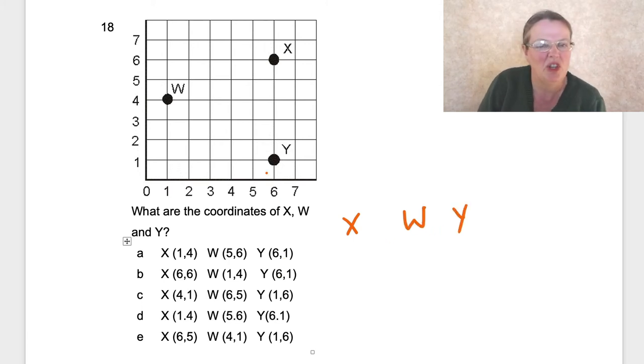It's usually the quickest way, otherwise silly mistakes creep in. So X is six - we go along the corridor and up the stairs. You crawl before you walk. So that's six and up six.